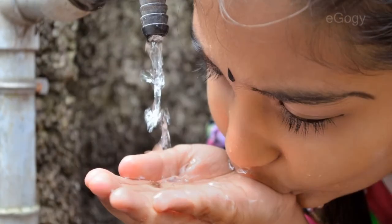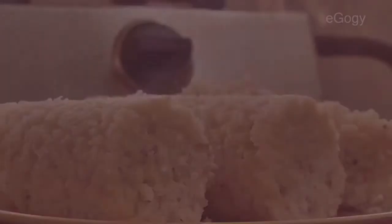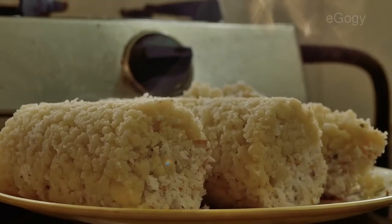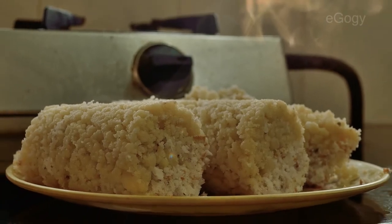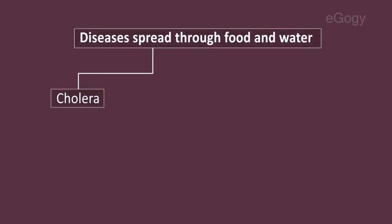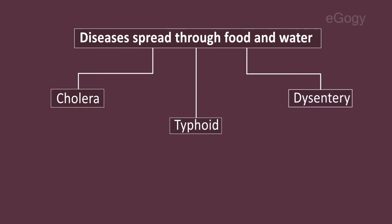Contaminated water and exposed foods are often sources of many diseases. Cholera, typhoid, and dysentery are some diseases which are spread through food and water.